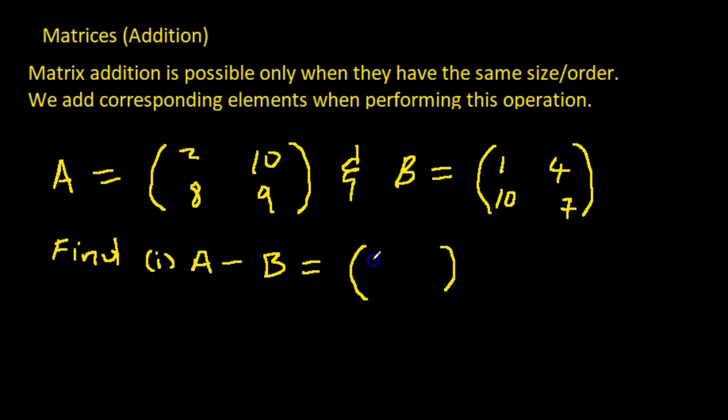10 take away 4 which is 6, 8 take away 10 which is -2, and 9 take away 7 which is positive 2. So the same rule: we add or subtract the elements that correspond.